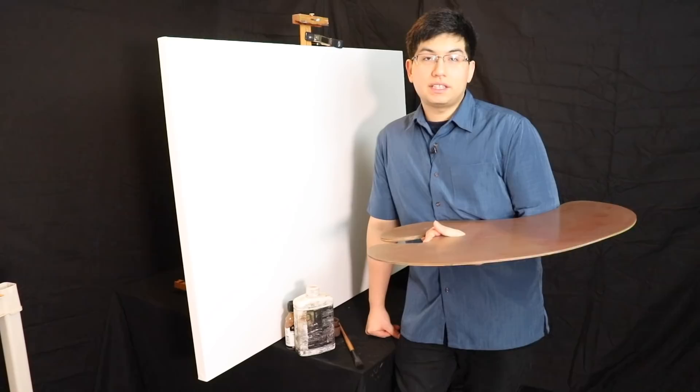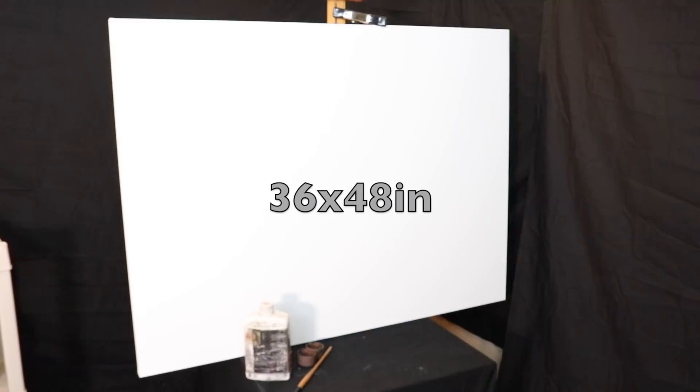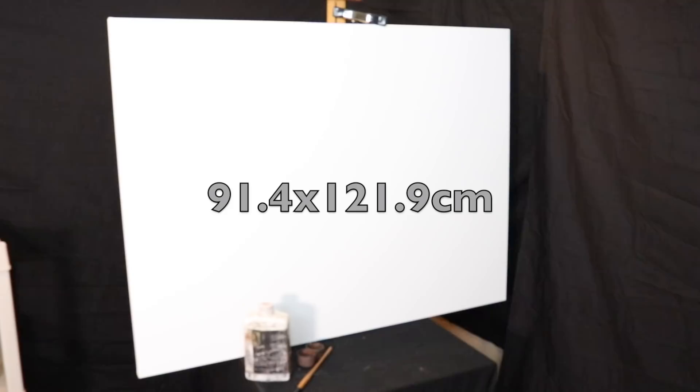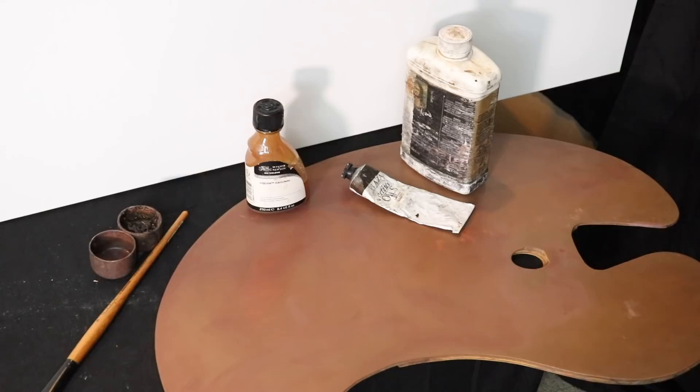Hello there and welcome back to a brand new day in the studio. In today's video, we're going to begin preparing ourselves for a fairly ambitious painting. This canvas we have here is a 36 by 48 inch canvas, that is 91.4 centimeters by 121.9 centimeters. The first thing we want to do is tone this thing with oil paint.